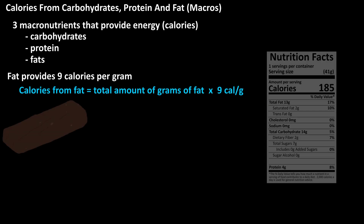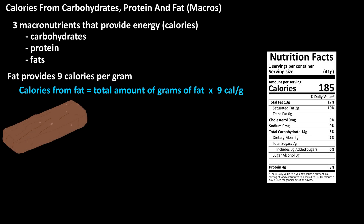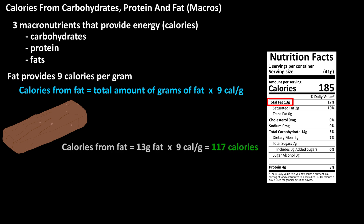For instance, if you eat a chocolate bar and on the nutrition label it lists total fat at 13 grams, to calculate the number of calories from fat it would be 13 grams of fat times nine, which equals 117 calories from fat.